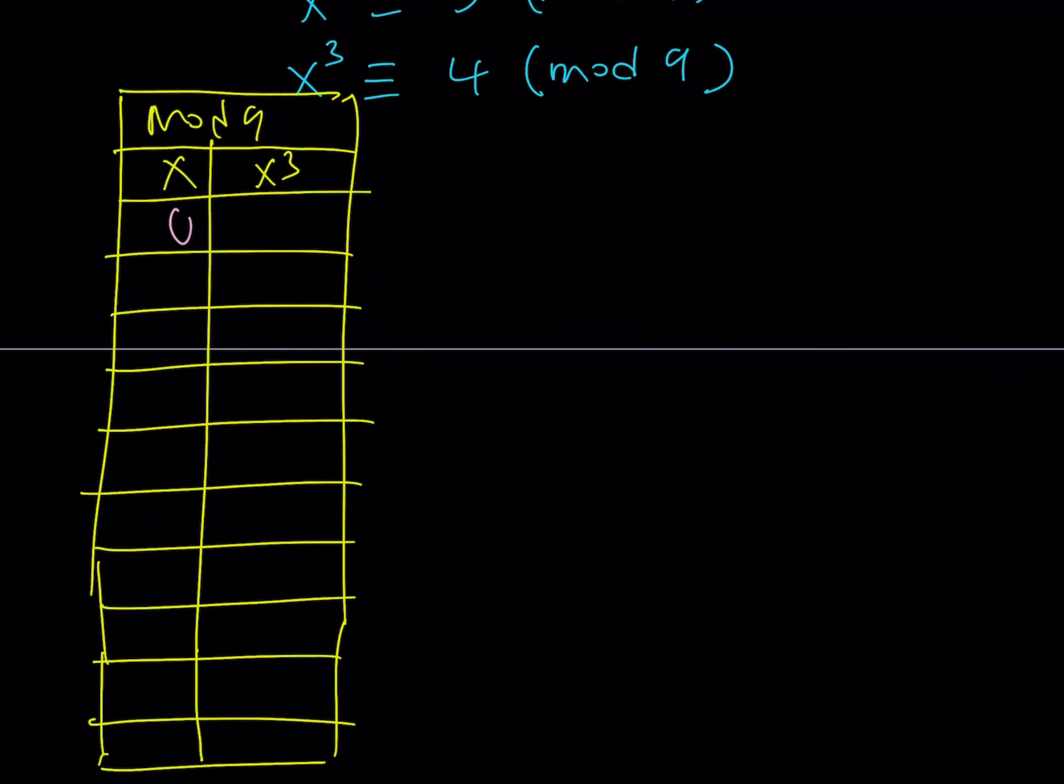So, I'll start with 0. If x is 0, then x³ is going to be 0 mod 9. If x is 1, it's going to be 1. If x is 2, if you cube it, it's going to be 8. If you want, you can write it as negative 1. No big deal. 3 is going to be 27. Because, I'm cubing it.